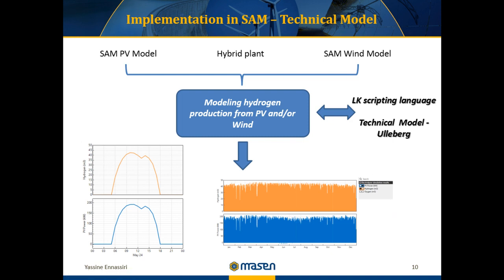Using SAM's LK scripting language, I was able to link the simulation results of the PV and wind model to the inputs of hydrogen production, and calculate the annual production profiles of hydrogen, oxygen, and also the water consumption profile. Moreover, all the variation parameters of the stack cells, such as current density and cell voltage, can also be visualized using the LK scripting interface.